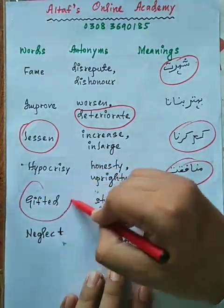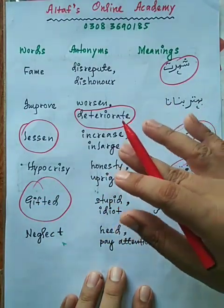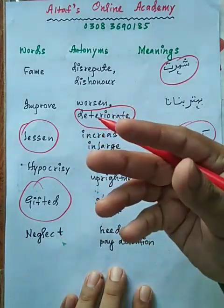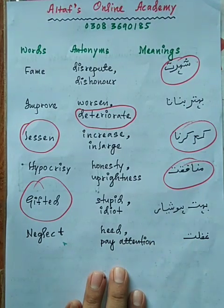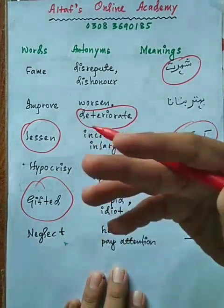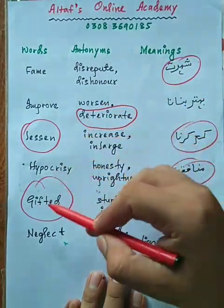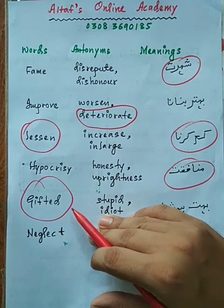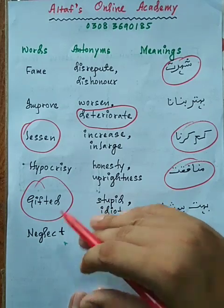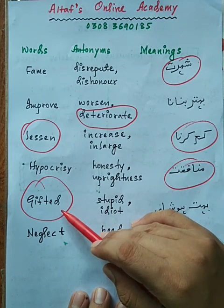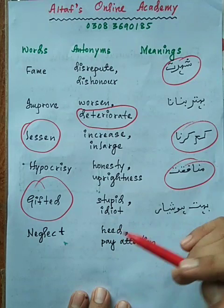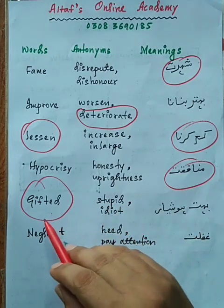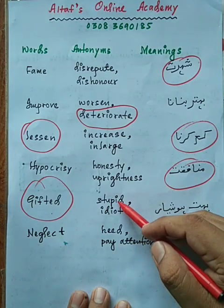Agla word hai 'gifted'. Yeh bara important word hai, isko ghaur se dekhein. Gifted ka matlab hai 'bahut hoshiyar' — jaise hum kehte hain 'yeh God-gifted hai'. IBA aapko passage mein likhega 'Ahmad is a very gifted student' aur neeche puchhe ga iska antonym. Gifted maane bahut hoshiyar, to iska antonym banega 'bewaqoof' ya 'dull'.